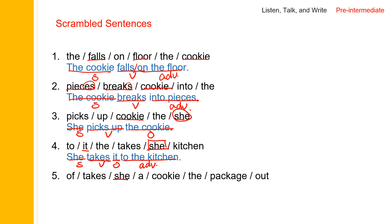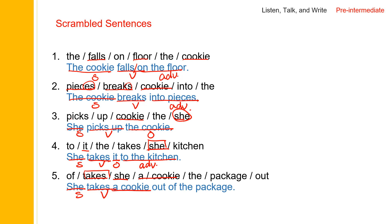She is the subject, and then takes. She takes what? Since take is transitive, you need an object. She takes a cookie — and then out of the package. She takes a cookie out of the package. She is the subject, takes is the verb, a cookie is the object, and out of the package is an adverbial phrase.